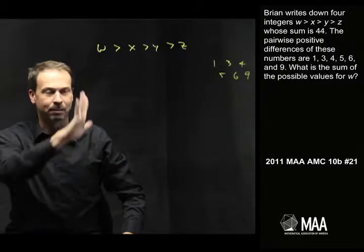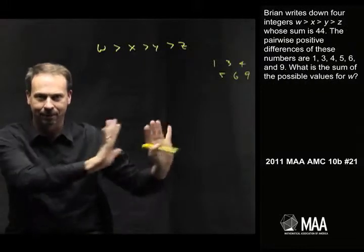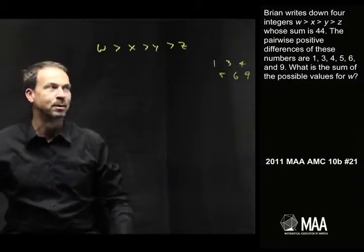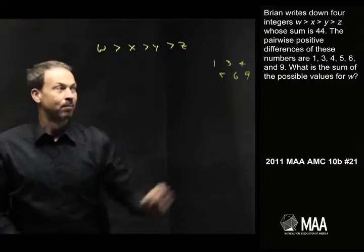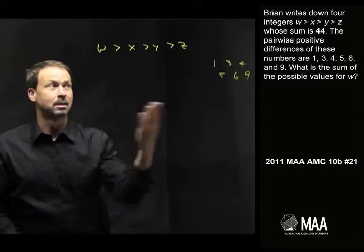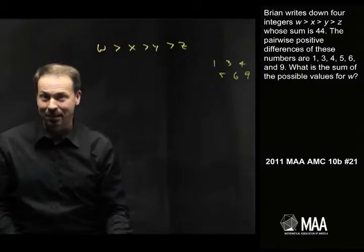Alright, and then the question is something about w, work out a value of w or something. That's a detail. It's a little bit scary. I'm going to leave that off for the moment. Alright, so here it is. These numbers add up to 44. They have pairwise differences given by those values. Tell me something about w. That's basically the question.